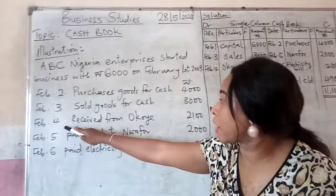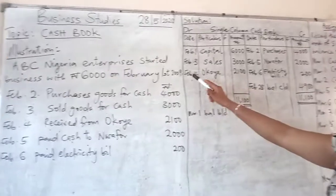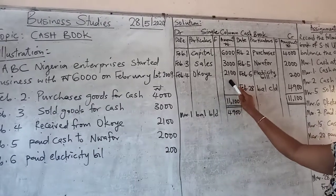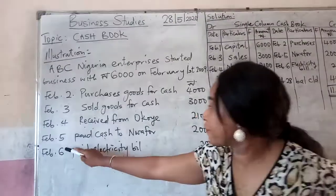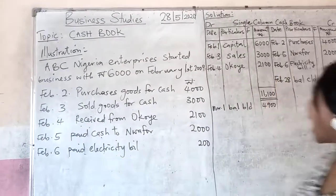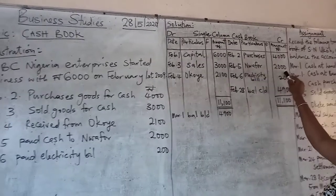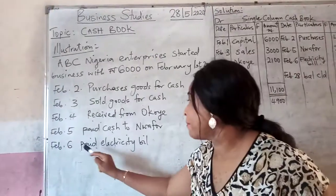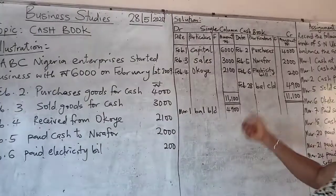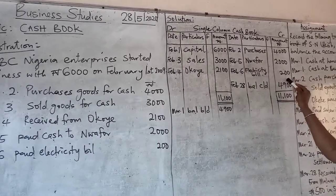Then on 4th February, he received money from Okoye on the debit side — 2,100 Naira. Then on February 5th, he paid cash to Wafo. He made payment, so it should go to the credit side: Wafo, 2,000 Naira. Then on the 6th, he paid the electricity bill — he settled his electricity bill — that is a payment on the credit side. Electricity bill: 290 Naira.